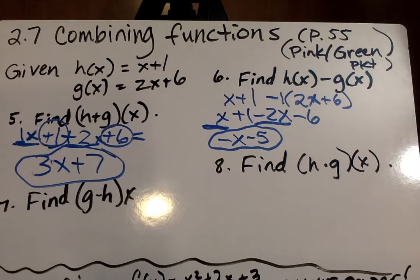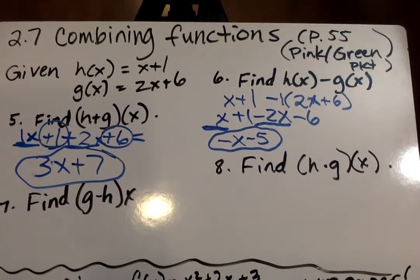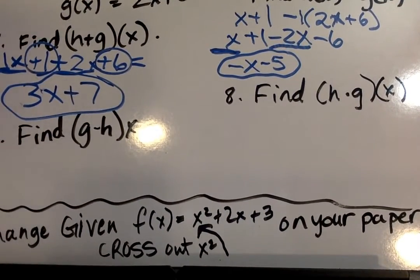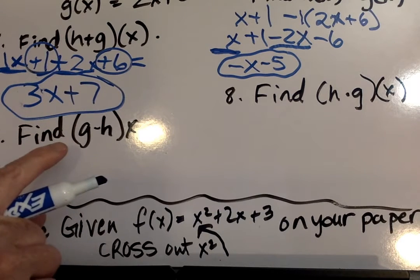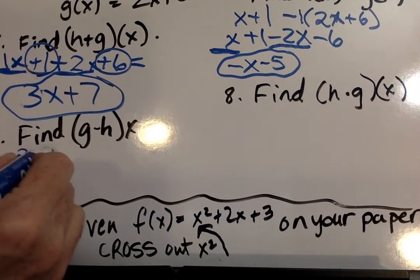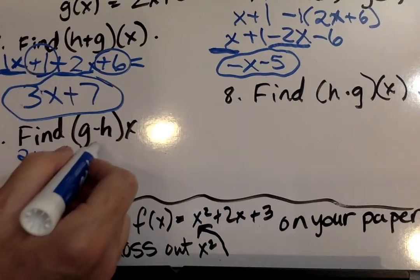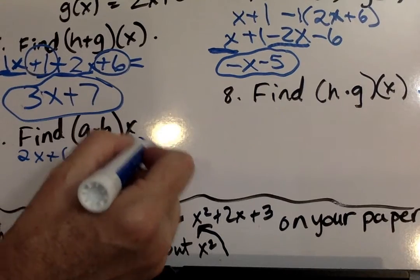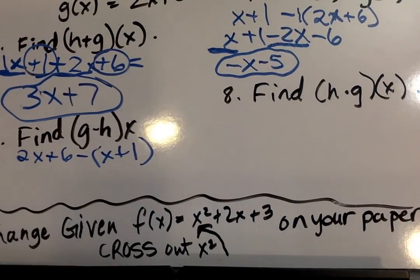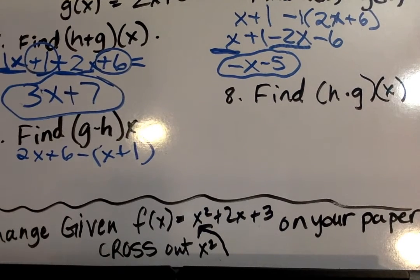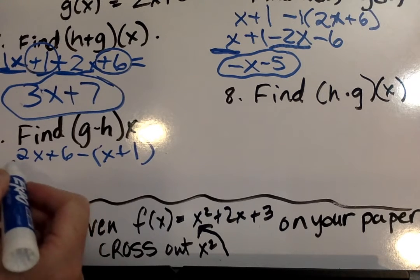Next we're going to go to number 7, and we have find g minus h of x. So that means we have to list g first. We know g is 2x plus 6 minus, and you've got to put it in parentheses, h is x plus 1. Now, g minus h, h minus g, do you think these are going to be the same? Probably not, because they're flip-flopped. That's like saying is 6 minus 7 the same as 7 minus 6? No, it is not. But there is a relationship between the two.